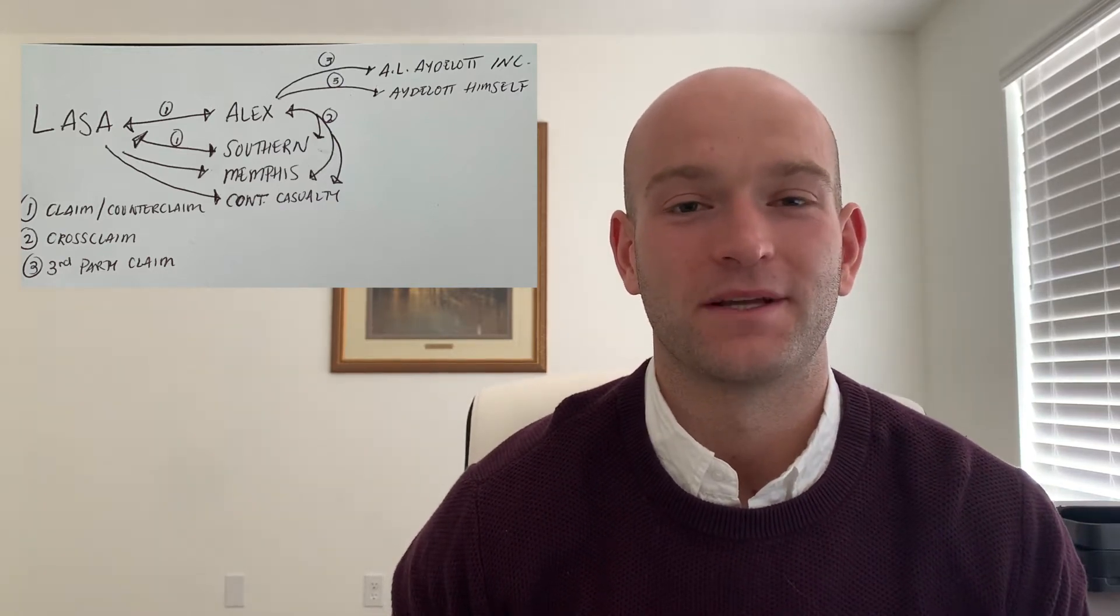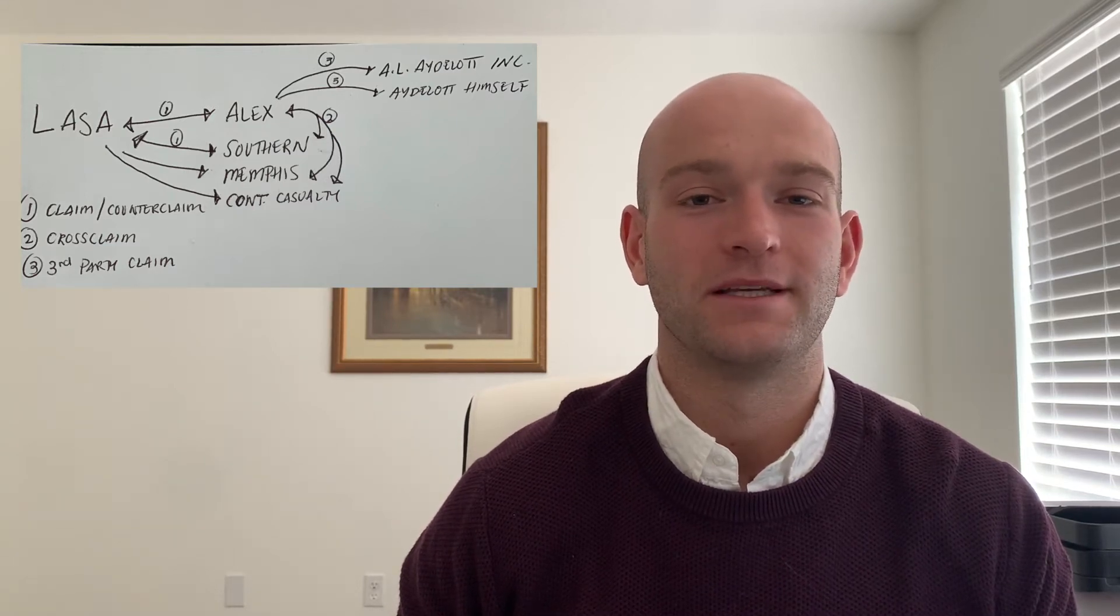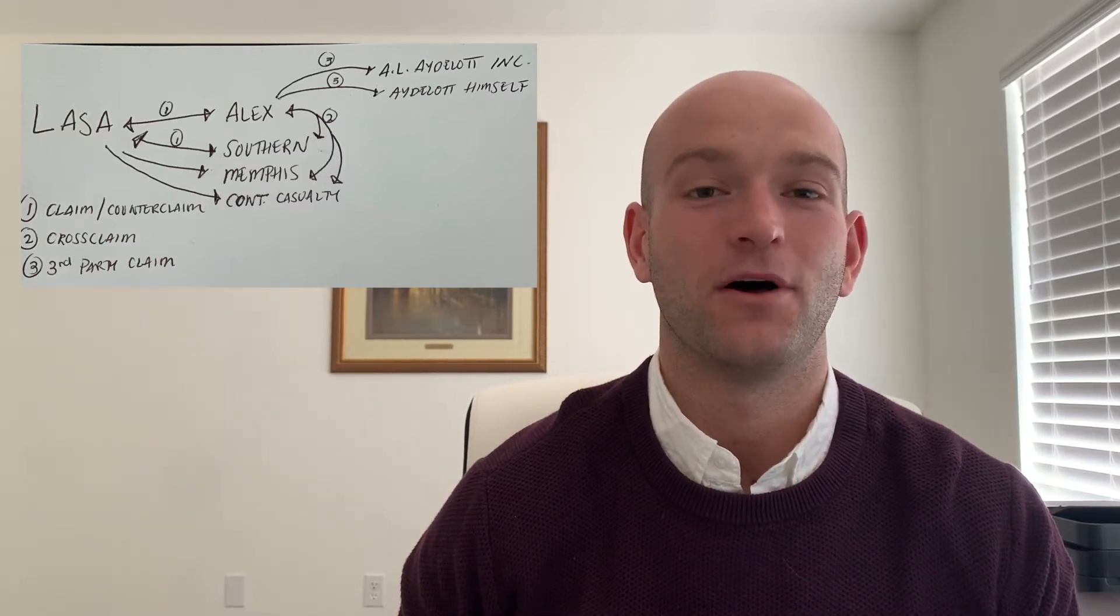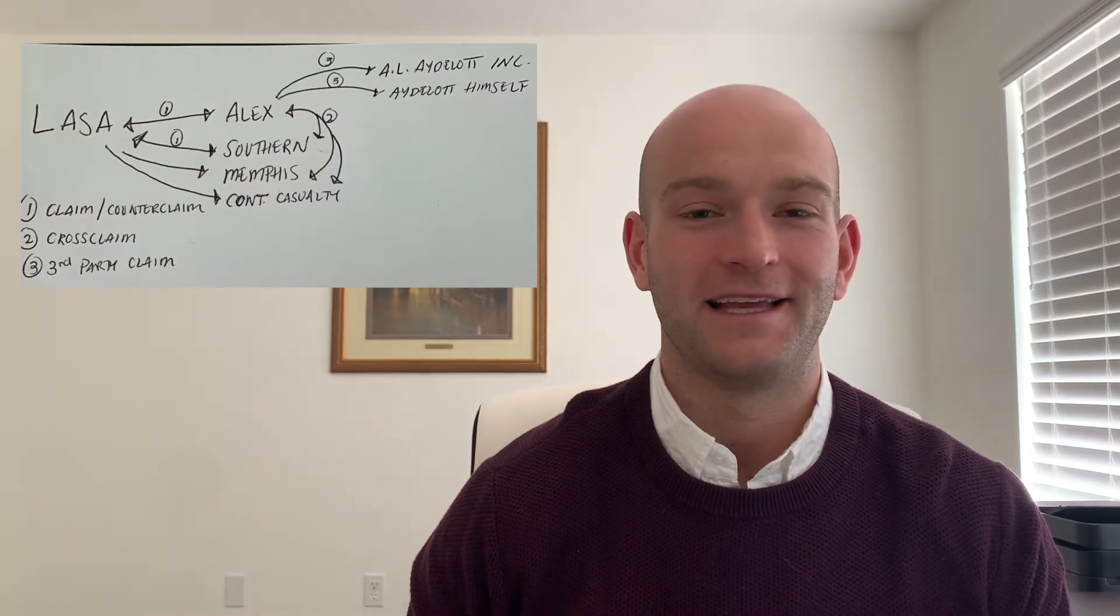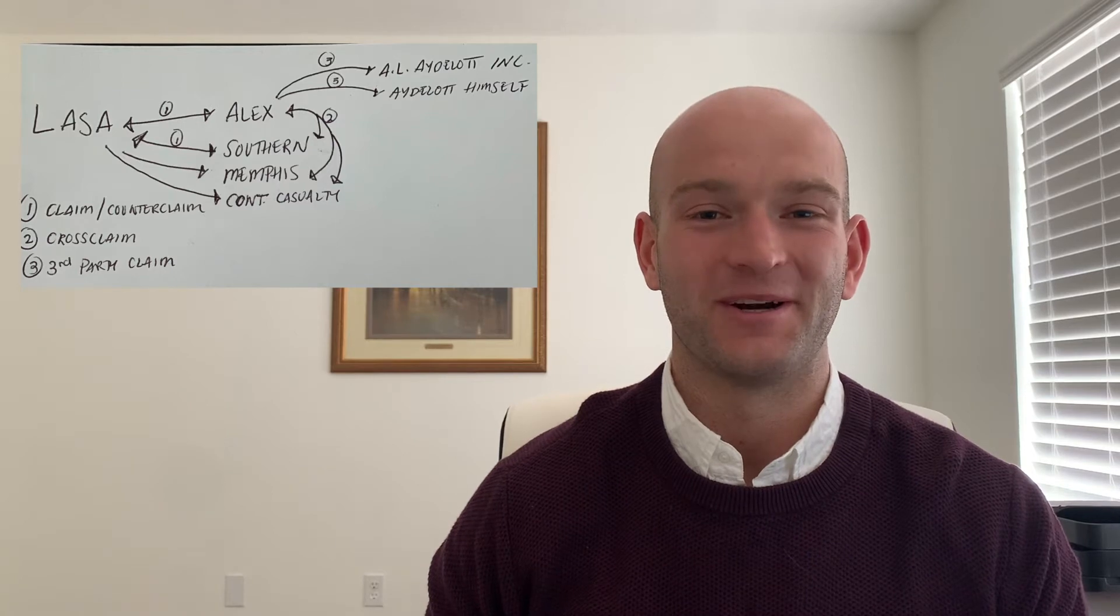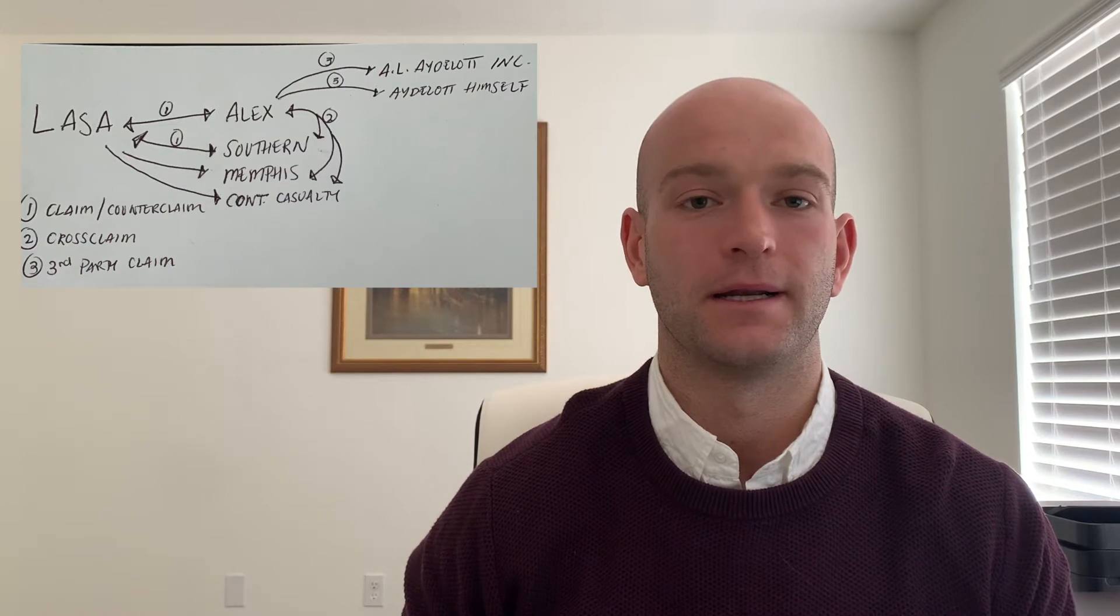So this case is all about the construction of a Memphis city hall. This city hall was meant to be constructed, at least in part, in marble. There's quite a few parties here. There's cross claims, there's counterclaims, there's third-party claims. I've drawn up a little diagram to help visualize what's going on here.